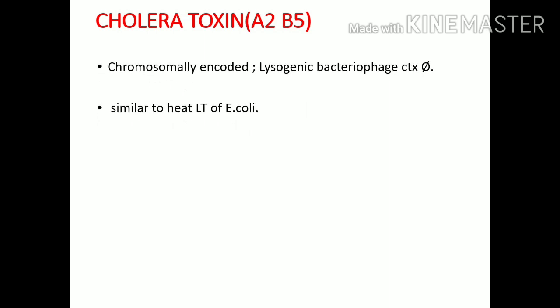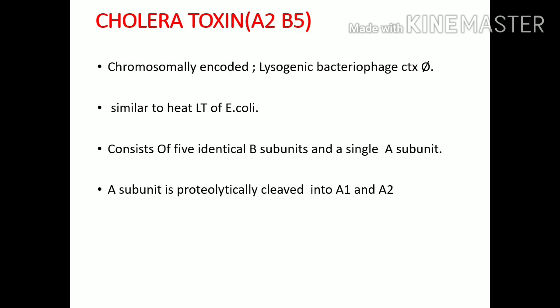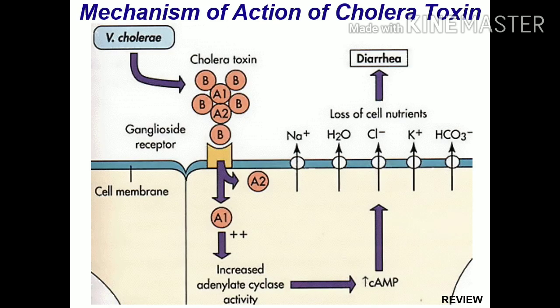The important toxin playing the whole role in cholera is the cholera toxin, which is similar to the heat-labile toxin of E. coli. It is chromosomally encoded and, although similar to the E. coli toxin, it is at least 100 times more potent, making the effects very severe. It consists of five identical B units and a single A unit; the A unit is further cleaved into A1 and A2. The B unit helps in binding, A1 is the functional unit, and A2 binds A1 to B.